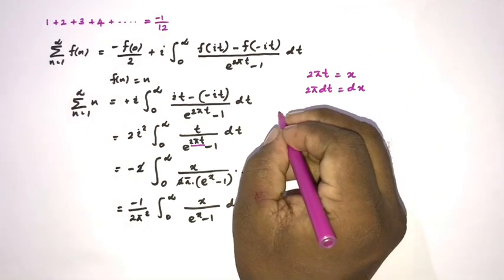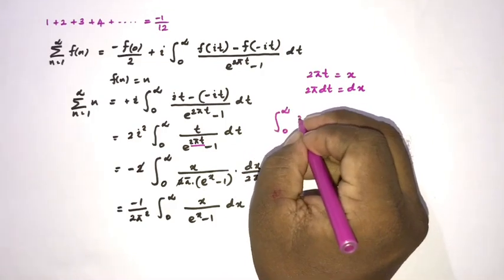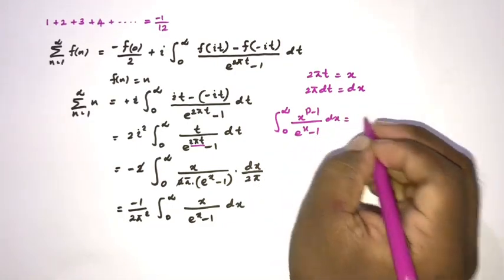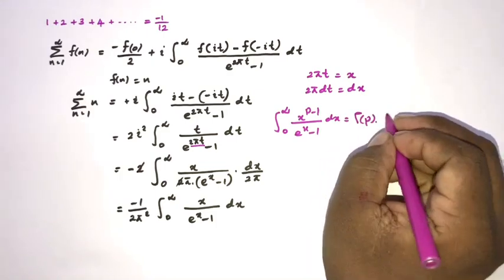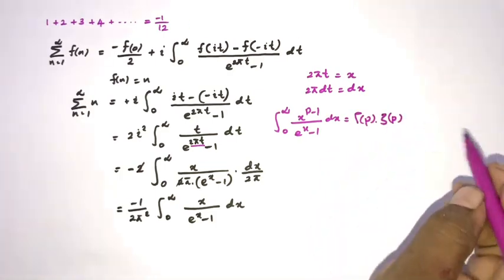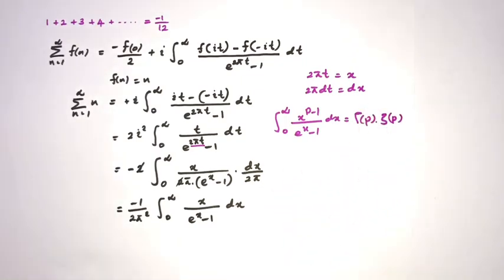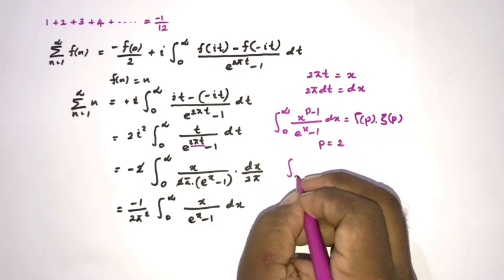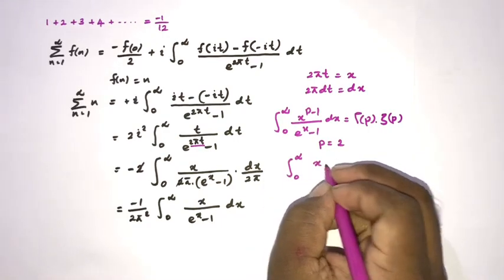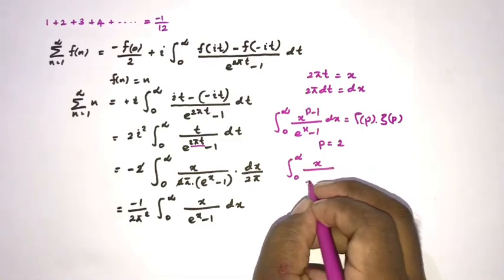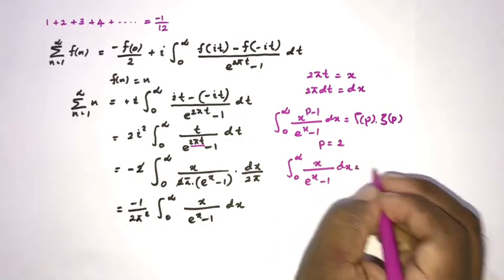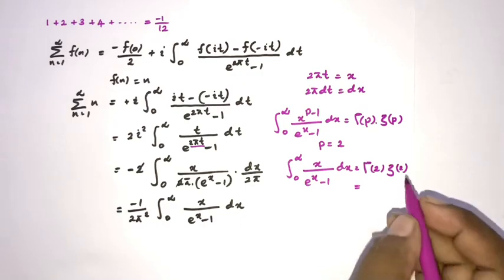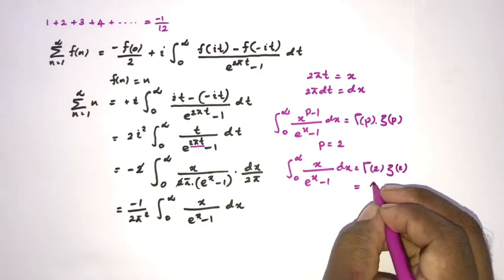We evaluate this using the known result: the integral from 0 to infinity of x^(p-1) over (e^x - 1) dx equals Γ(p)·ζ(p). A link will be added in the description. Applying p = 2, our integral becomes the integral of x over (e^x - 1) dx, which equals Γ(2)·ζ(2).